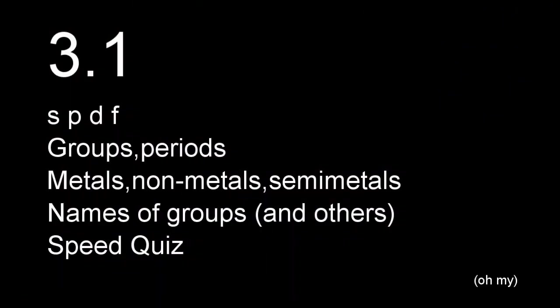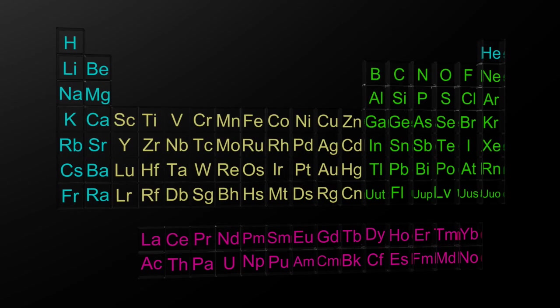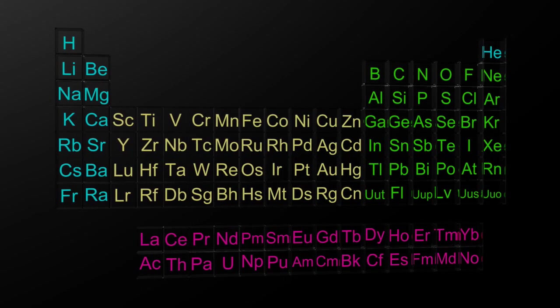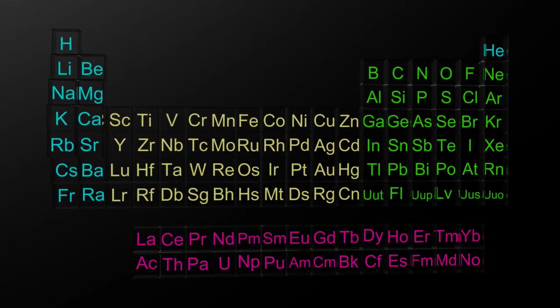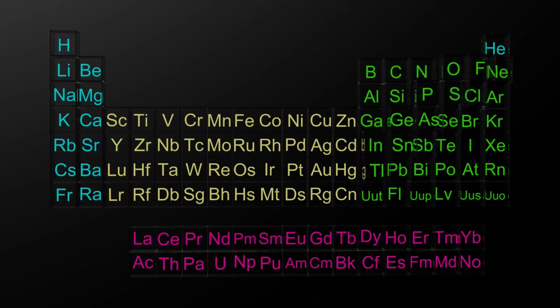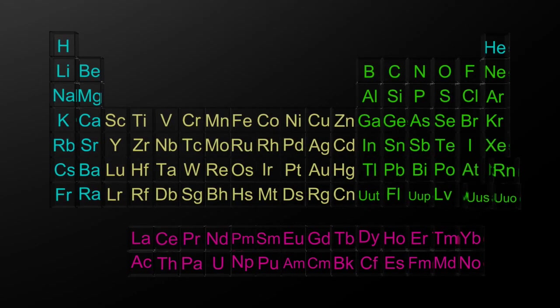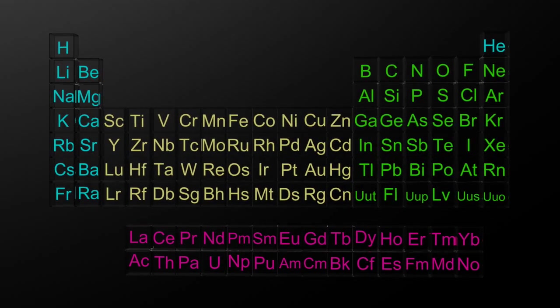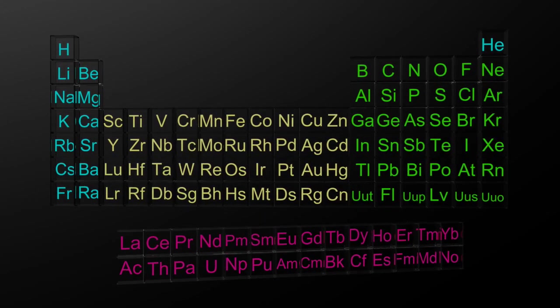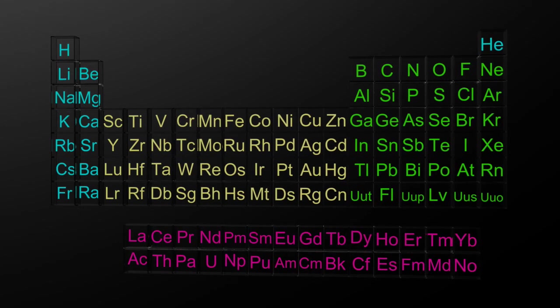The IB likes to split the periodic table up in four different ways, so let's look at them one by one. That's the S block — don't forget the helium. P block, D block, and finally the F block at the bottom.